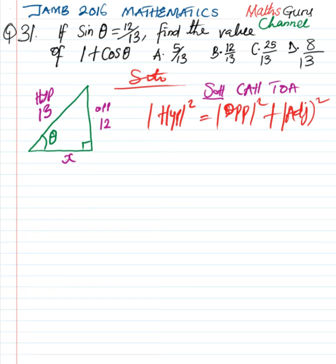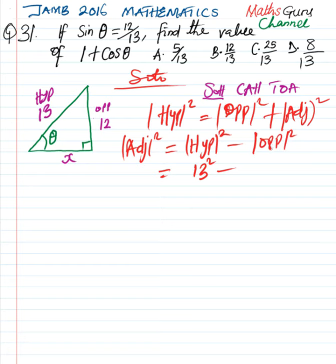That is to say, the square of the adjacent is equal to the square of the hypotenuse minus the square of the opposite. So, we are going to have 13 squared minus 12 squared. This is going to be 169 minus 144, which equals 25.